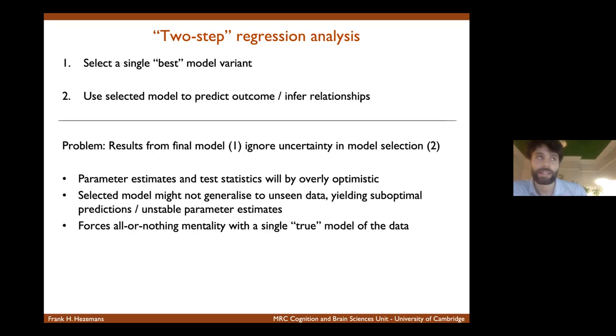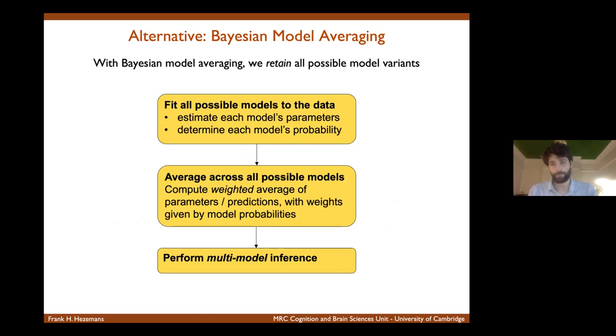And also more of a conceptual point, but it's not really, you know, it enforces this all or nothing approach where there is a single best model that explains data. And an alternative approach, which is what I want to talk about here today is to use Bayesian model averaging to retain all of the possible model variants. And then at the end of this analysis approach, you'll end up with a weighted average of all of the different models on which you can base your substantial inferences.